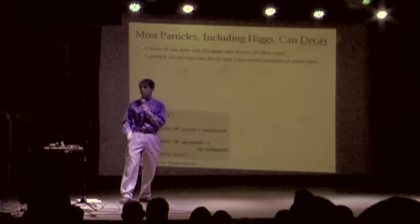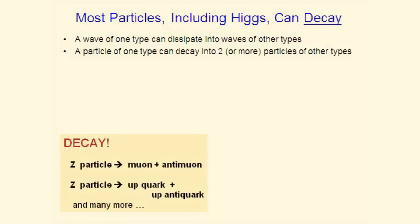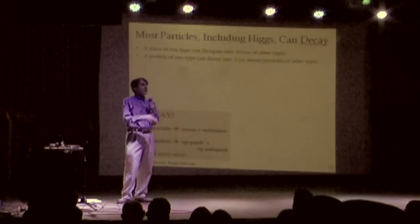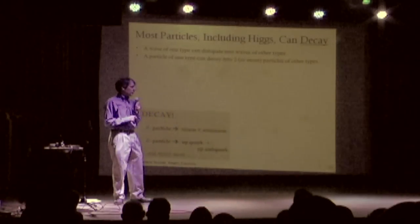For example, the Z particle can just spontaneously disappear and turn into a muon and an anti-muon, its anti-particle. Or it can turn into an upquark and an anti-upquark. It's got actually lots of different possibilities available to it.